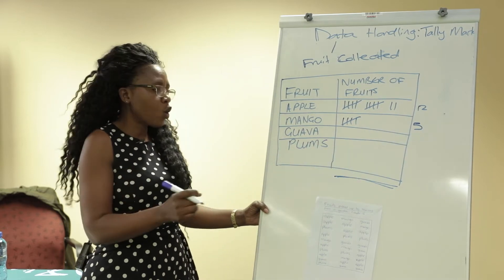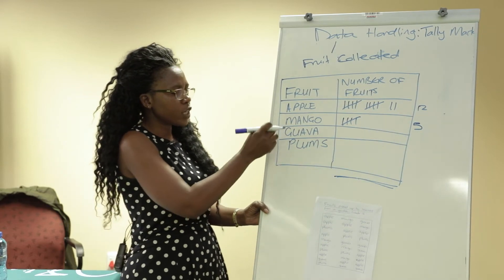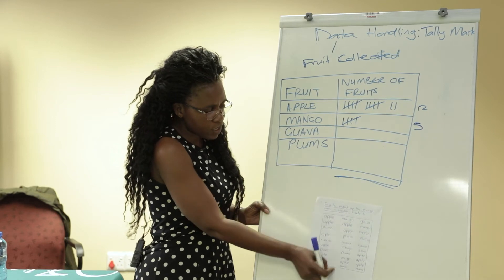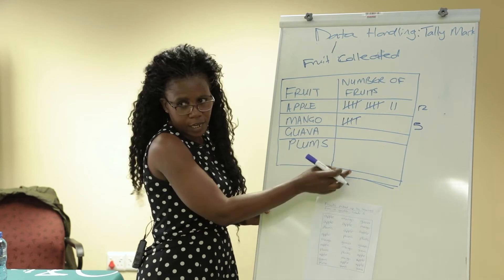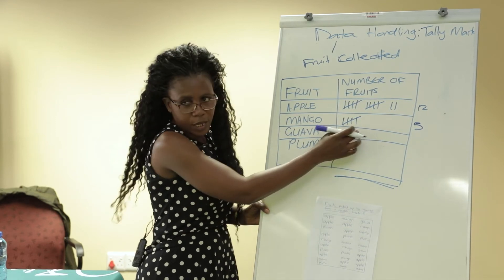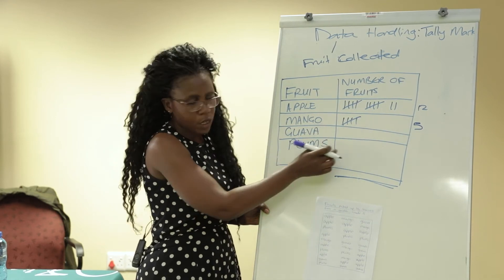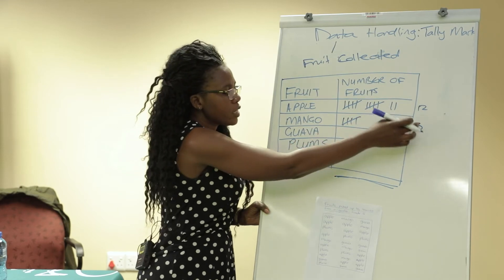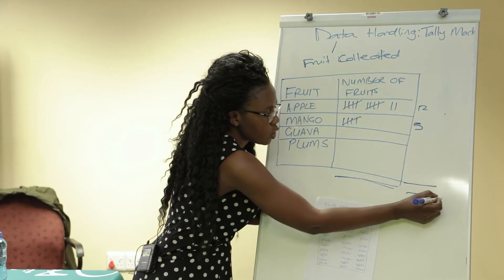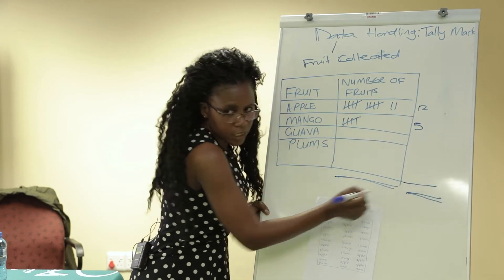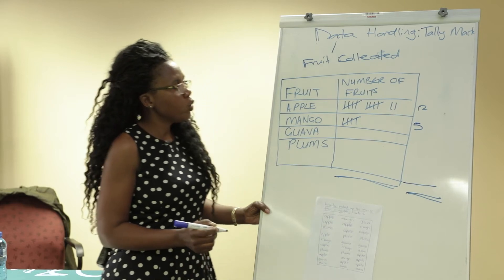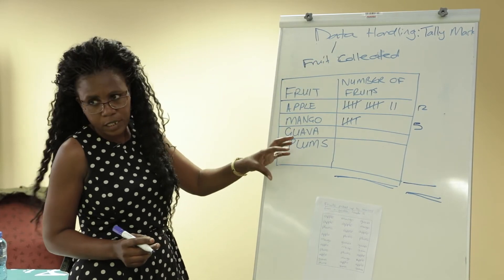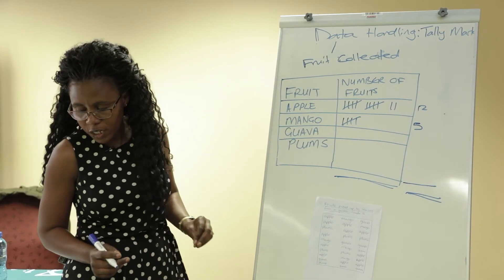I would like you to go on and do the calculation — add the number of guavas that are here, put them there, add the number of the plums, put them there, and when you are done, give us the total. That is how you use the tally mark to add and get the totals.